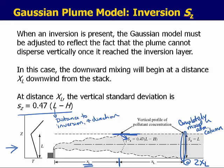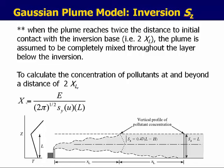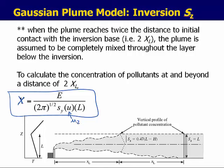Under inversion conditions, the Gaussian plume model simplifies so that the concentration Big X equals the emission rate divided by 2 pi to the one-half, S of Y, mu, and L. It's only a function of S of Y — not S of Z. You need to determine whether your position X downwind is less than or greater than 2X_L, and that determines which equation you use for concentration at that location. If X is less than 2X_L, use the long form; if X is greater than 2X_L, use the simplified short form.